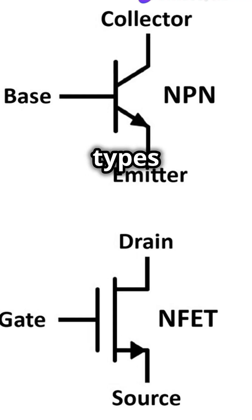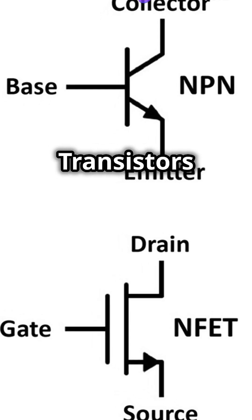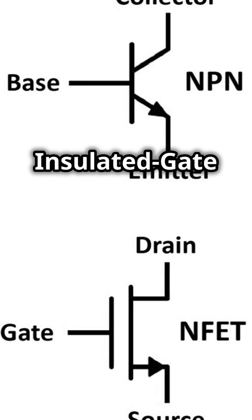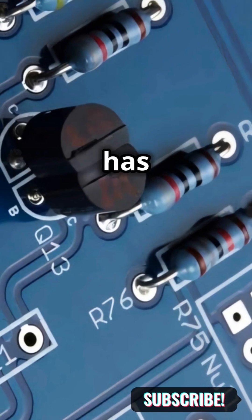There are three main types of transistors: Bipolar junction transistors, field effect transistors, and insulated gate bipolar transistors. Each type has its own special powers.